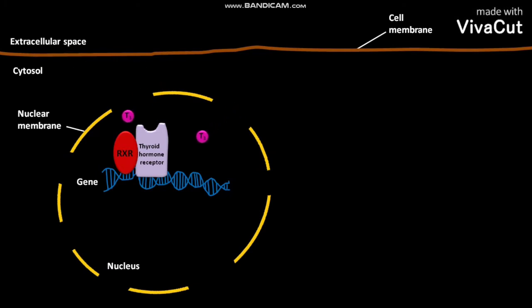In the nucleus, the gene has a thyroid hormone response element. To this thyroid hormone response element, a heterodimer containing an inactive thyroid hormone receptor and a RXR is bound.